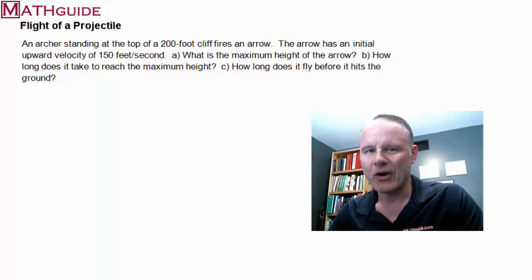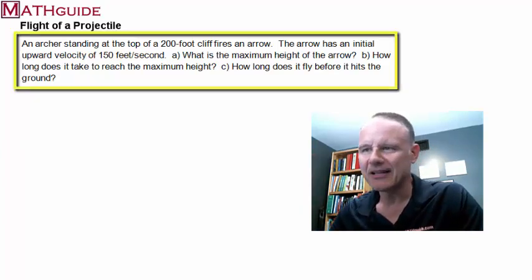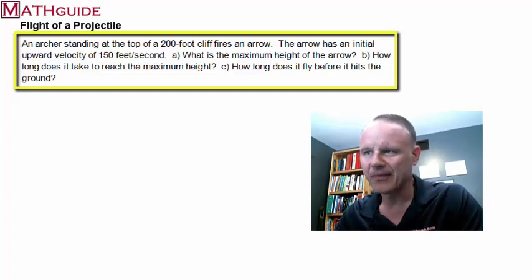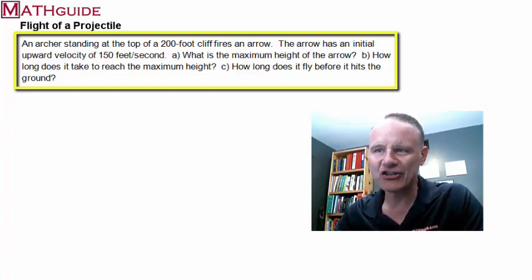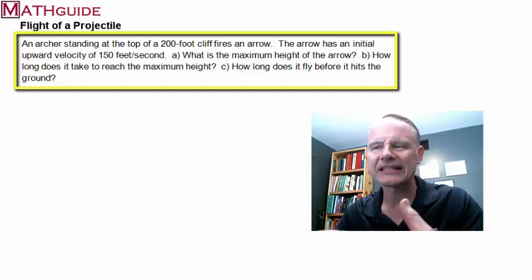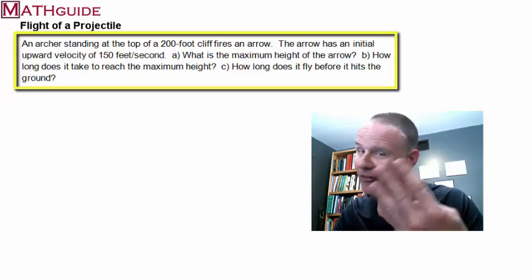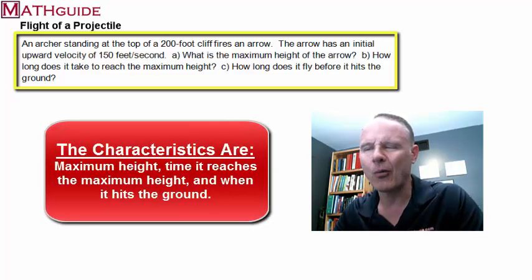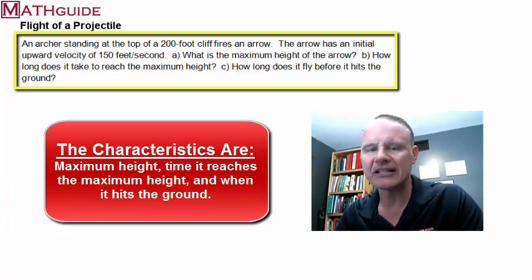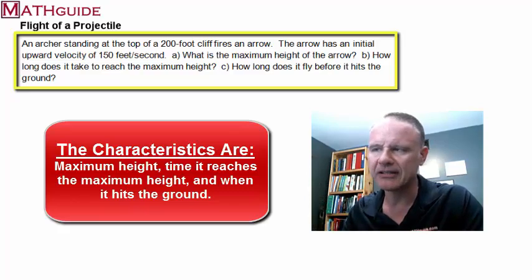Let's actually use this for a problem. This is a typical question that you get with a flight of a projectile type of problem. An archer stands at the top of a 200-foot cliff and fires an arrow. If the arrow has an initial upward velocity of 150 feet per second, what are the things that we can determine from this given information? Well, there's three things. We can figure out what the maximum height of the arrow is. We can figure out when it reaches that maximum height, and of course, when it eventually hits the ground.